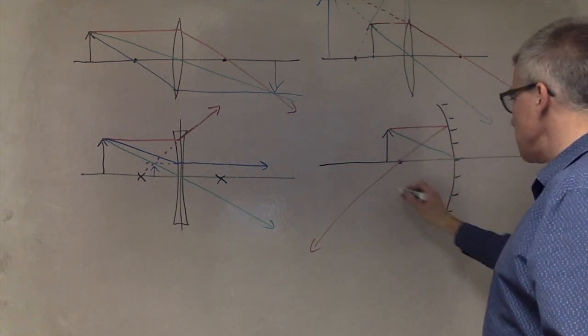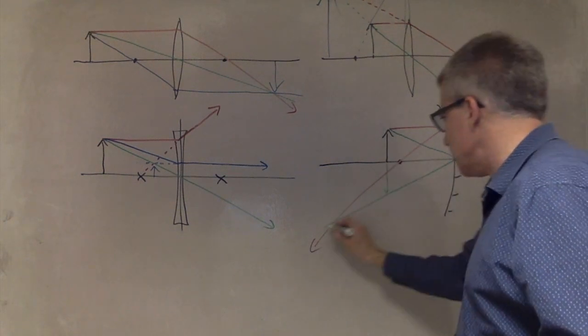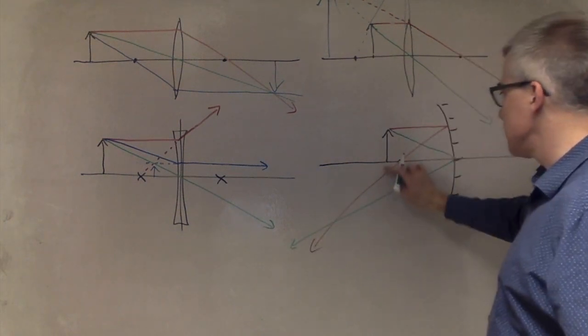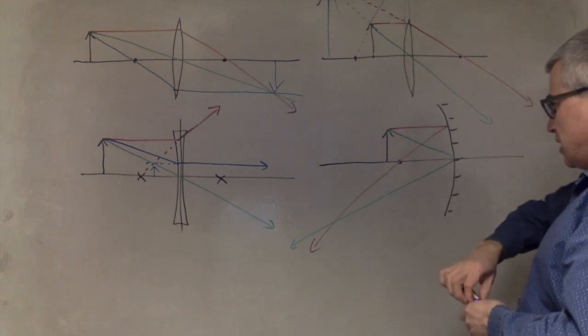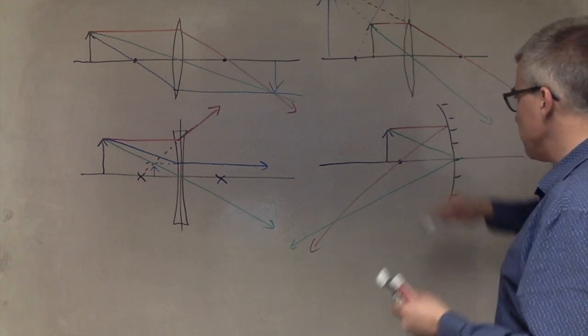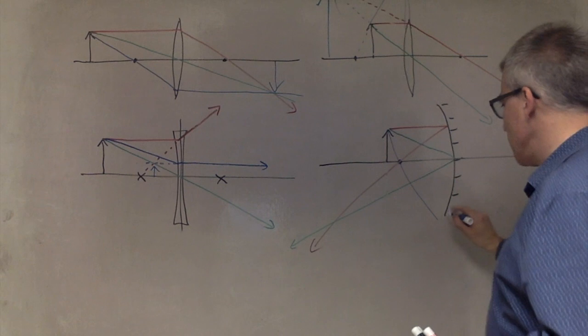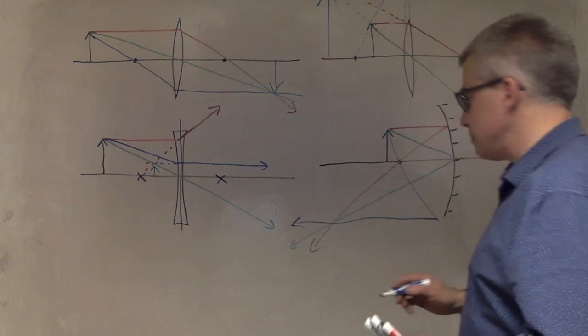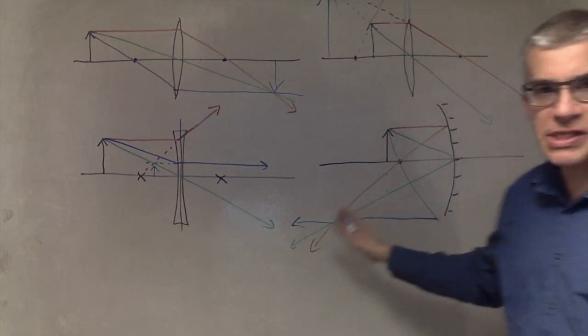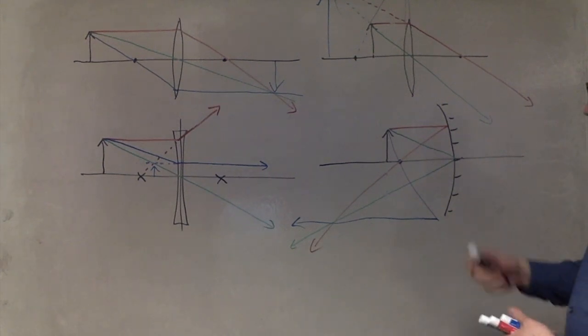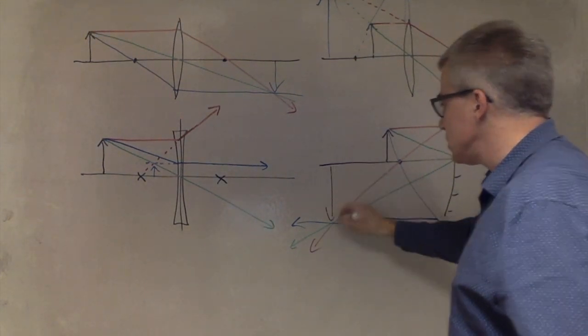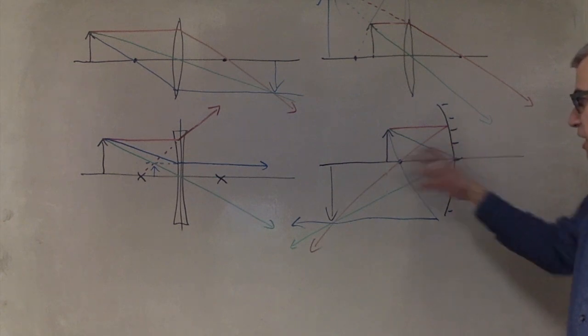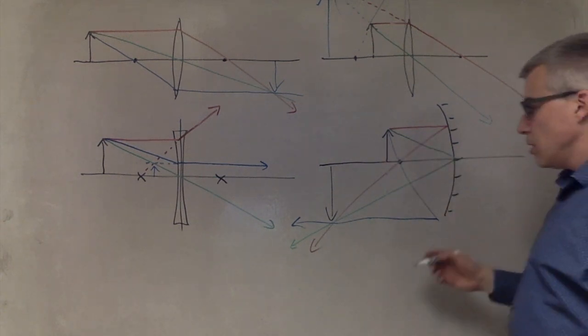Beam bouncing off the center goes that way. And beam through the focal point goes parallel. I'm doing quick rough sketches. So, this is making a real inverted image, which in this case happens to be larger.